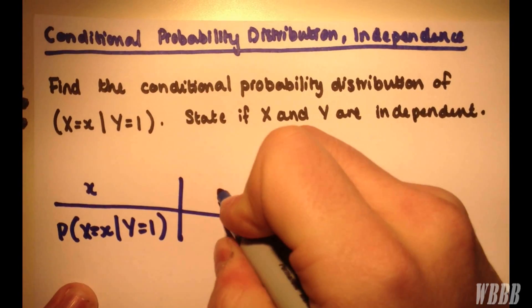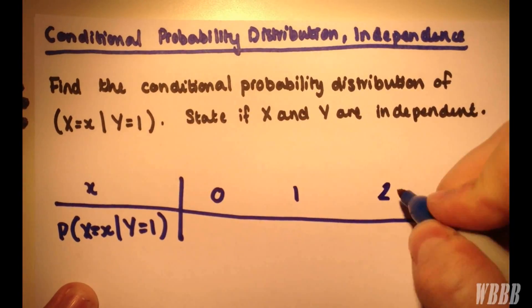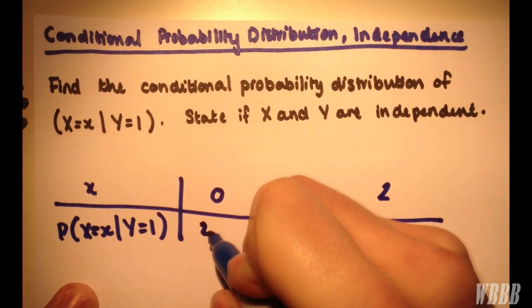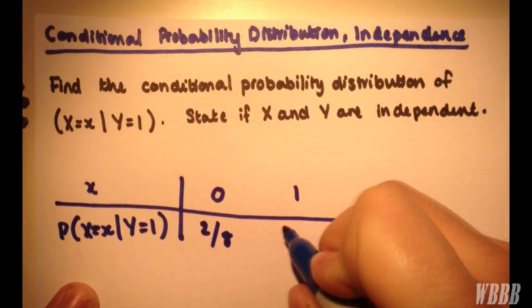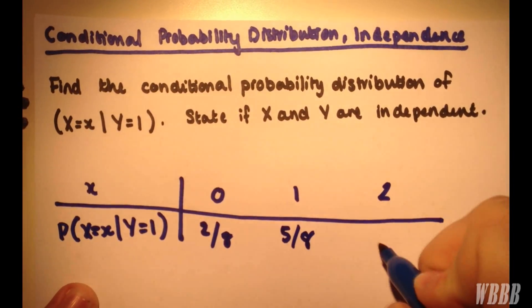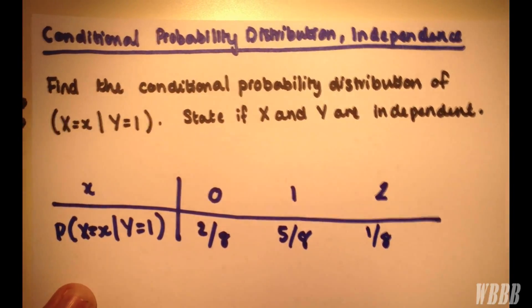I should have used a ruler. So, 0, 1, and 2. And as you can see, we have values over 8, over 8, and over 8.